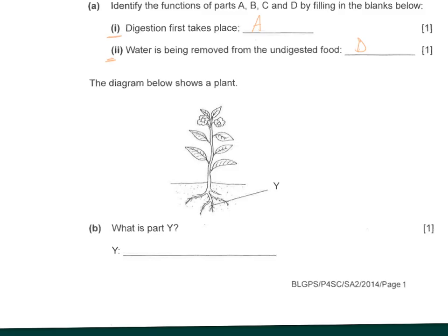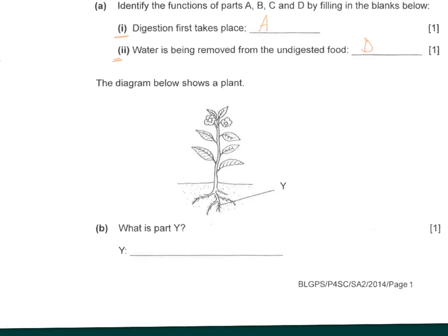For part B, what is the name of part Y? We should be clear about the different parts of a plant. Only Y is being asked for here. Y is actually the root. For additional revision — even though the question didn't ask — this part is the stem, these are the leaves, and this is the flower. So part Y is the root of the plant.